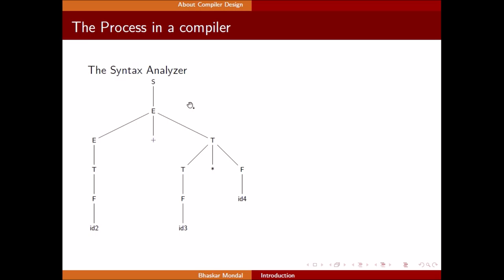If the syntax analyzer has a grammar like S to E, E to E plus T or T, T to T into F or F, and F to ID, we can generate a syntax tree. The syntax analyzer finds that it can represent ID2 plus ID3 multiplication ID4. The syntax analyzer confirms it's possible to generate a syntax tree using the input statement with the given grammar.